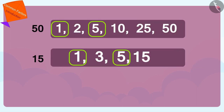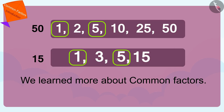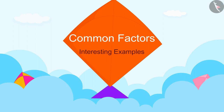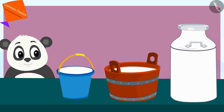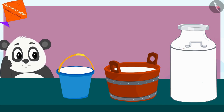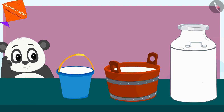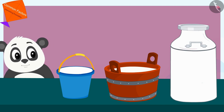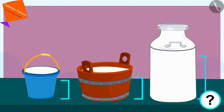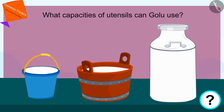Hello kids! In the previous video we learned more about common factors. In this video we will learn more about common factors by some interesting examples. Golu has 12, 18, and 24 liters of milk filled in different pots, but Golu doesn't remember which utensil has how many liters of milk. Golu is thinking that he will measure the milk of all those utensils using a single vessel.